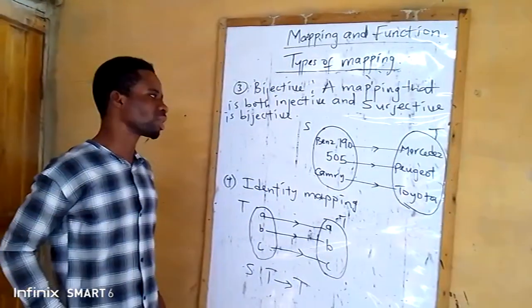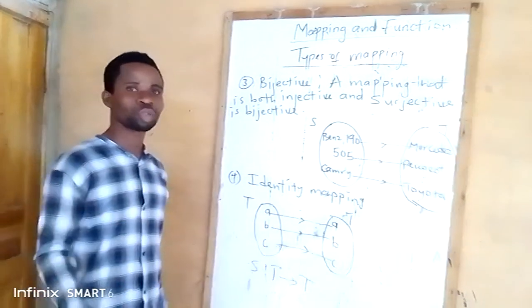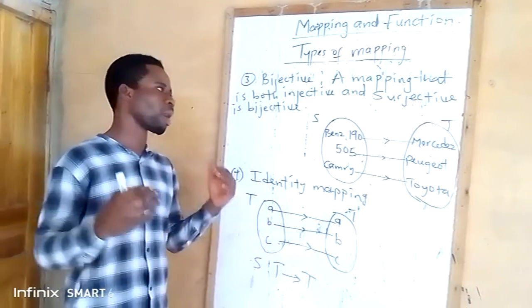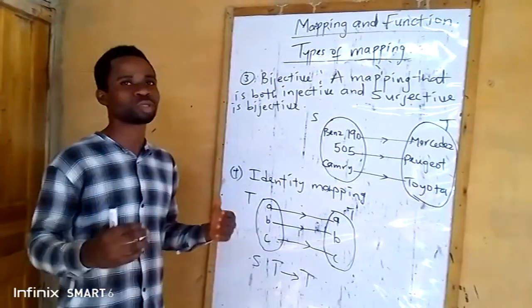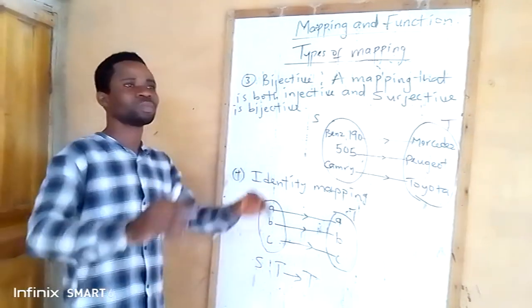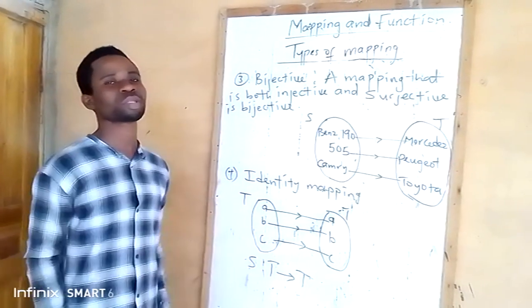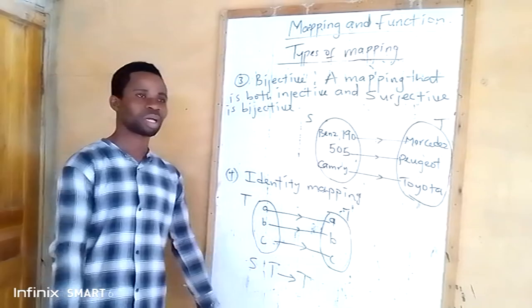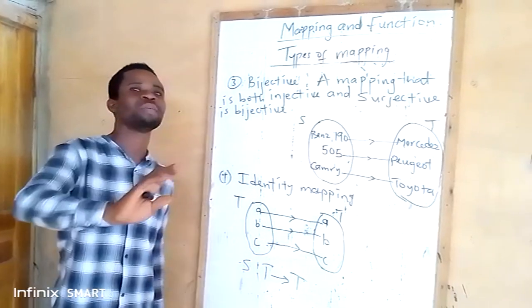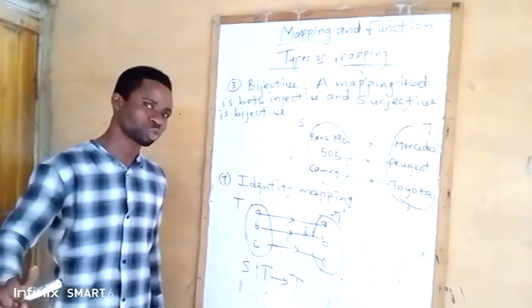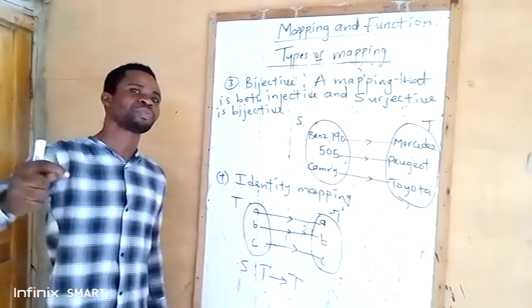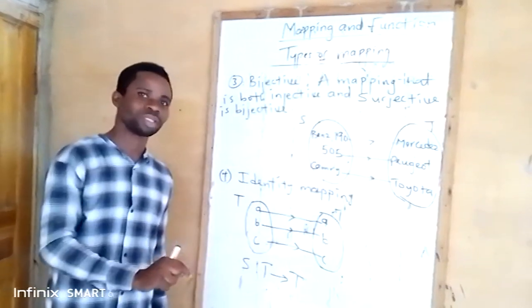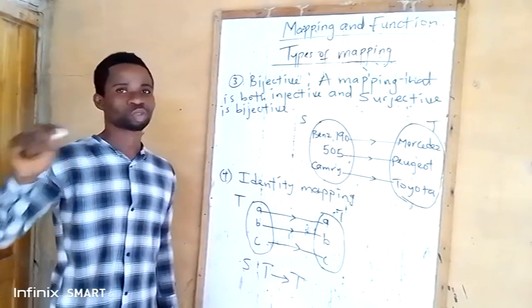Surjective is onto. For a mapping diagram to be surjective, all the elements in the co-domain must also be in the range or image. That means there must not be elements left out without being paired with something in the domain. That is how surjective works.